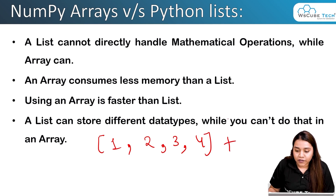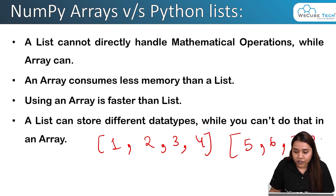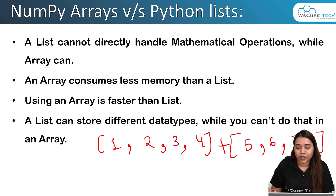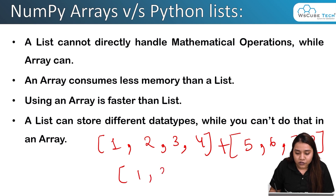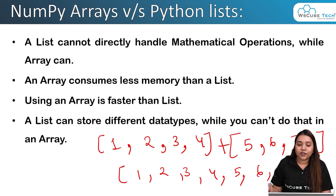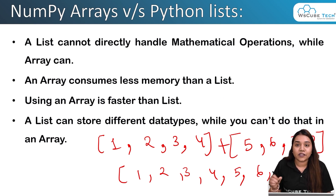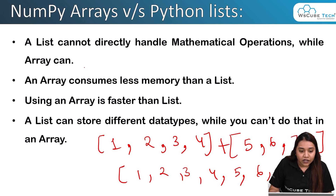If we have a list with one, two, three, four and another list with five, six, seven, eight, and we apply a plus operator between them, it would not add the elements — it would create a new list with all eight elements: one, two, three, four, five, six, seven, eight. In NumPy, however, arrays would add the elements and give us the actual element-wise addition as output.